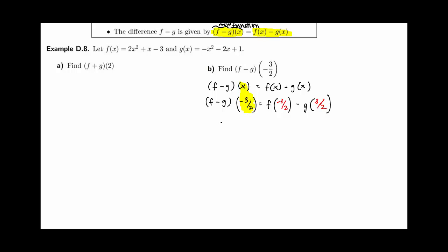f of negative 3 halves would be 2 times negative 3 halves squared plus negative 3 halves minus 3, minus g of negative 3 halves, which would be negative negative 3 halves squared minus 2 times negative 3 halves plus 1.